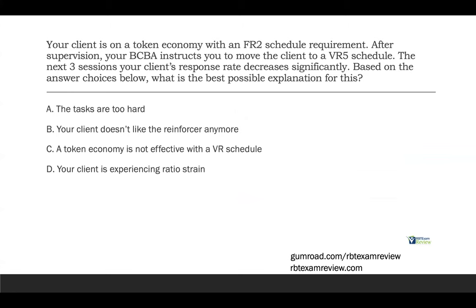Your client is on a token economy with an FR2 schedule requirement. After supervision, your BCBA instructs you to move the client to a VR5 schedule. The next three sessions, your client's response rate decreases significantly. What is the best possible explanation for this? If you've been studying and are well-versed in your task list, you should immediately know the answer — you don't even need to read the answer choices.